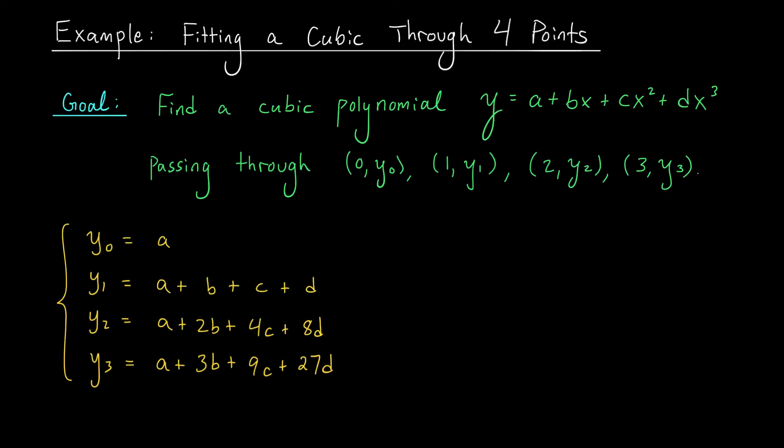I'm going to follow the same approach as in the course notes and lead you to the general formula for this polynomial through an example. Suppose that we have four data points (0,y0), (1,y1), (2,y2), and (3,y3). We would like to find a cubic polynomial y equals a plus bx plus cx squared plus dx cubed that passes through those four points. But how do we determine the coefficients a, b, c, d?